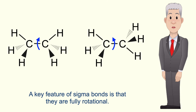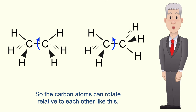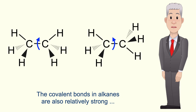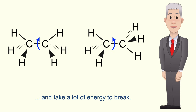A key feature of sigma bonds is that they're fully rotational, so the carbon atoms can rotate relative to each other. The covalent bonds in alkanes are also relatively strong and take a lot of energy to break.